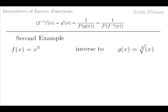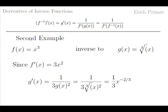For the second example, g of x equals cube root of x is the inverse function of f of x equals x cubed. Since f prime of x equals 3 times x squared, we get g prime of x equals 1 over 3 times g of x squared, which is equal to 1 over 3 times cube root of x squared, which is equal to one-third x to the power of negative 2 over 3.